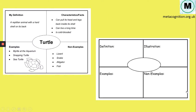You can see here again an example on the right of what it looks like, and on the left are some examples. We're looking at 'turtle' — definition, characteristics, examples — and for the non-examples, they can be made even better. A lot of people confuse a turtle with a tortoise, so that would be a very common misconception. A terrapin would also be a very common misconception.